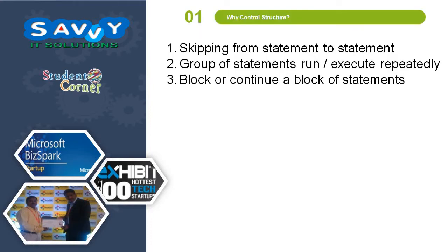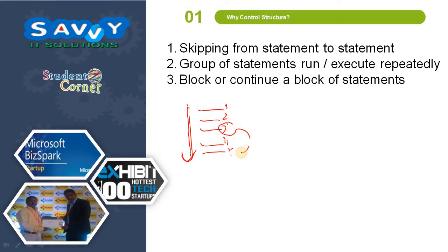So why Control Structures? This is one of the important parts. The first reason is skipping from statement to statement. Traditional programming is executed in a sequential way, so moving from, say, statement 3 to 5 directly is not possible in a sequential way. We need to check some conditions and skip those statements accordingly — to solve the problem of skipping from statement to statement, control structures are needed.